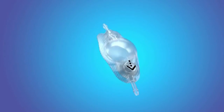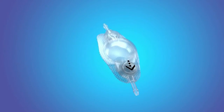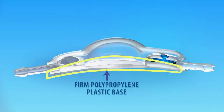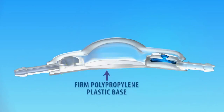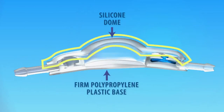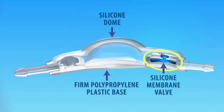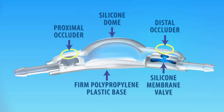The Medtronic contoured valve consists of a polypropylene base, a silicone dome, and a silicone membrane valve. The contoured valve also has proximal and distal occluders for selective flushing.